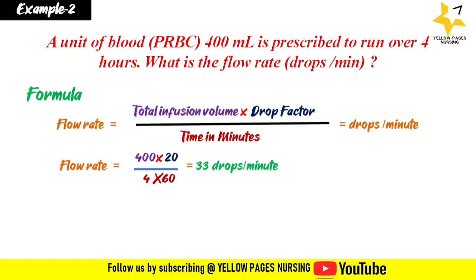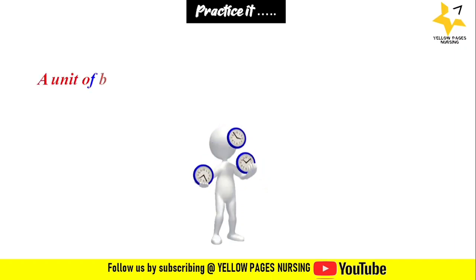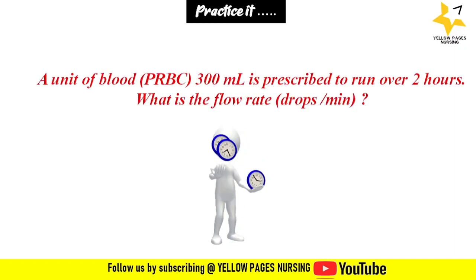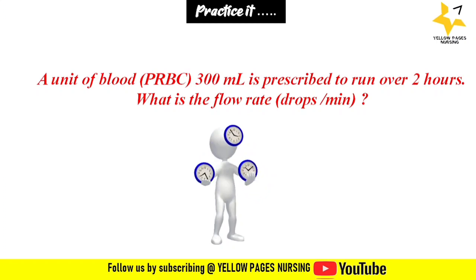We need to start the blood transfusion at 33 drops per minute, but for the first 15 minutes we start at a rate of 16 to 20 drops per minute, and after 15 minutes we increase to 33 drops per minute as calculated. Approximately half of the calculated flow rate will be the flow rate for the first 15 minutes. Here is one more example for practice: a unit of blood PRBC 300 ml is prescribed to run over two hours — what is the flow rate in drops per minute? You can mention your answers in the comment box.